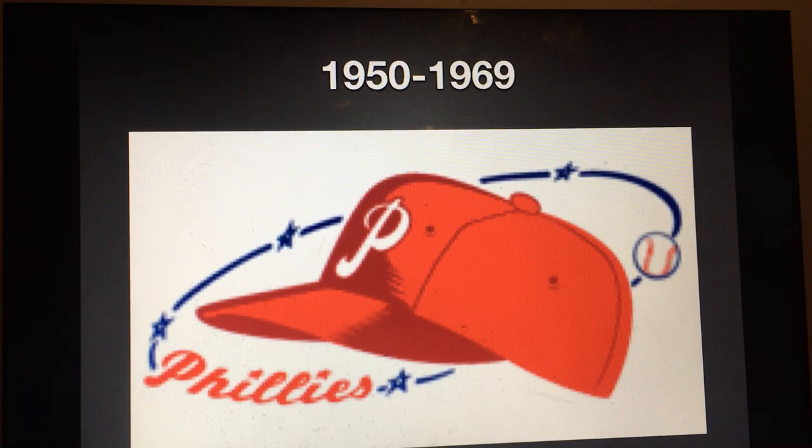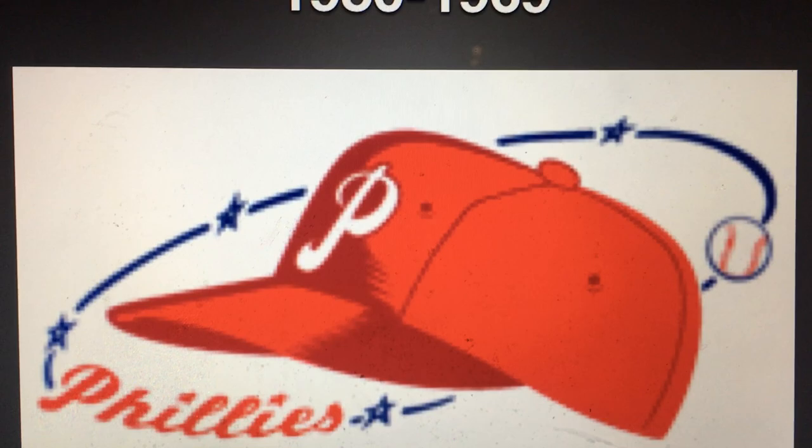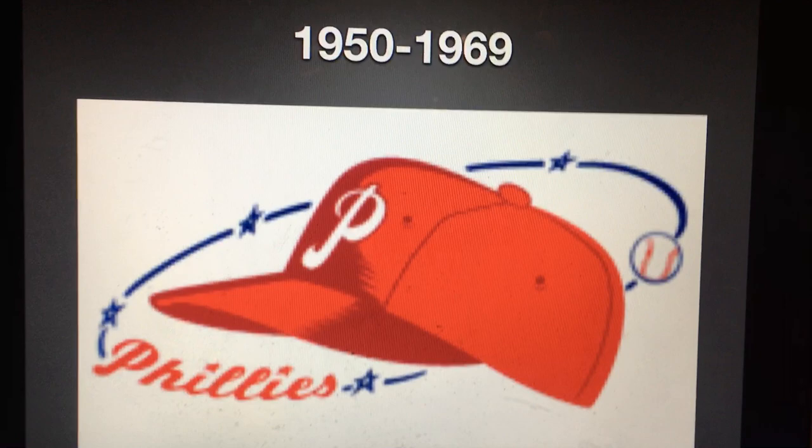1950 to 1969, we have a red cap with the letter P in it, and here we have this orbit, kind of, with the word Phillies. Also, the orbit features a baseball because it's a baseball team.